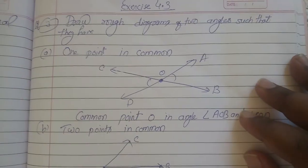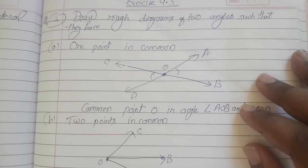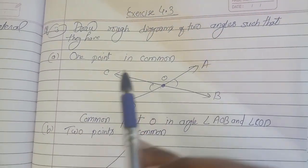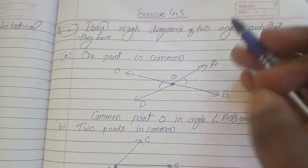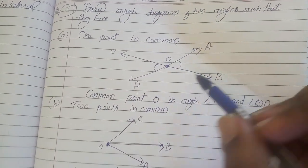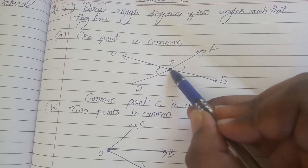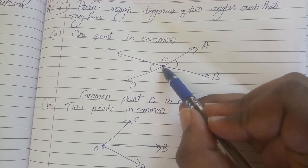Exercise 4.3: Draw a rough diagram of two angles such that they have one point in common. So we have that angle AOB and angle COD, and what we have the common point here - we have that O point common here in this.